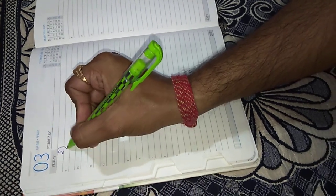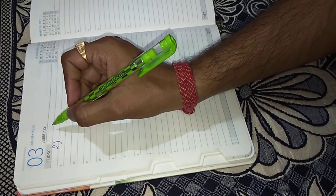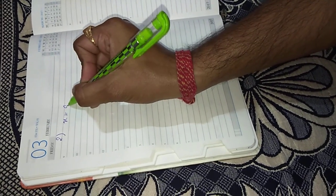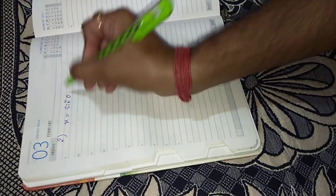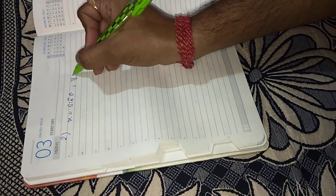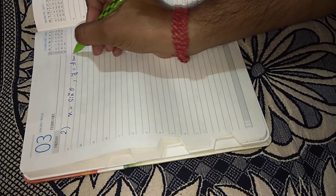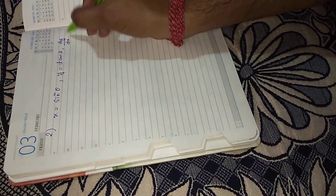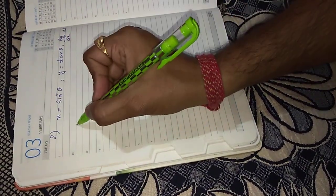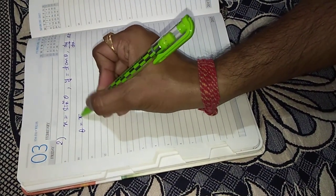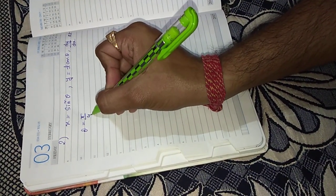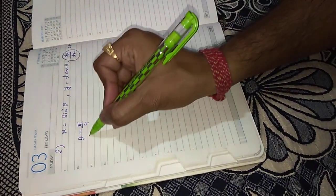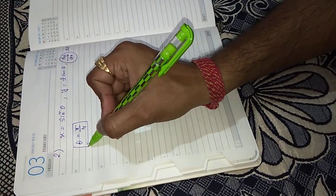Let us take the second example of differentiation of parametric form. If x equals sine square theta and y equals tan theta, then find dy by dx at theta equals pi by 4. Here you have to find dy by dx at a particular point, theta equal to pi by 4.